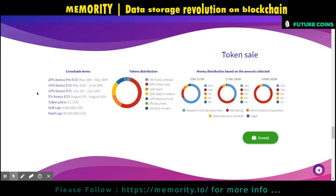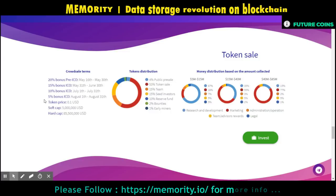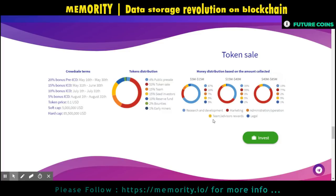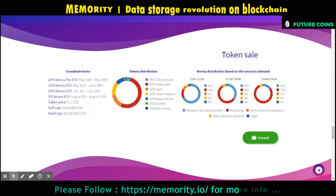Now let's see the details of the crowdsale. The ICO starts on the 16th of May and ends on October 1st. The token price is $0.10 USD. Their soft cap is $5 million USD and the hard cap is $85.5 million USD.